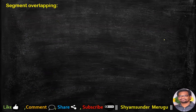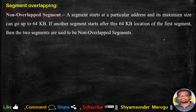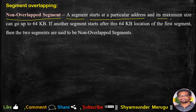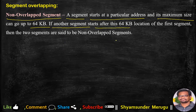Now let us talk about the concept of segment overlapping. First, the non-overlapped segment: if a segment starts at a particular address with a 64 KB size, and another segment starts after the first segment ends — that is, after the 64 KB of the previous segment — then those two segments are said to be non-overlapped segments.